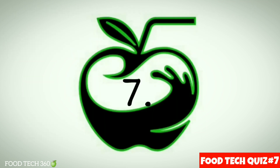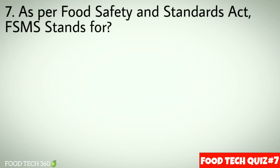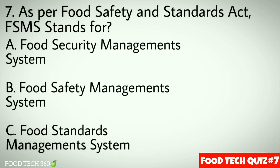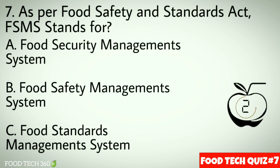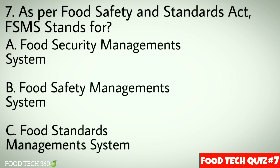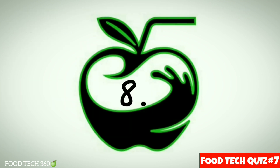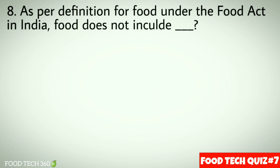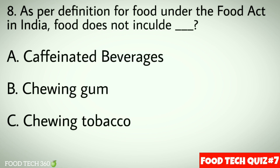Question number 7: As per the Food Safety and Standards Act, FSMS stands for — options: a) Food Security Management System, b) Food Safety Management System, c) Food Standards Management System. Correct answer: b) Food Safety Management System. Question number 8: As per the definition for food under the food act in India, food does not include — options: a) Caffeinated beverages, b) Chewing gum, c) Chewing tobacco. Correct answer: c) Chewing tobacco.